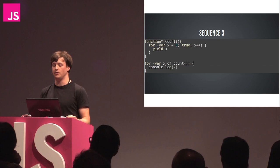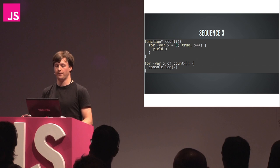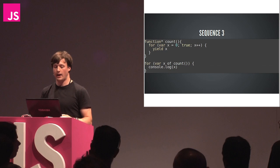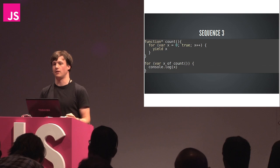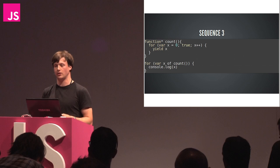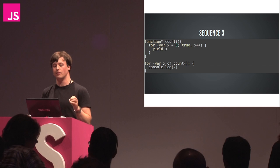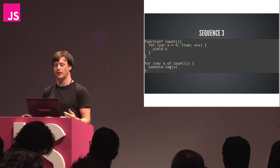What happens with this count function is that the function is executed only when we request the value. Initially, when you call count, none of the code inside the body is executed. Then the for loop requests the first value from count, and at that point it executes as far as that first yield keyword. When it gets to that first yield keyword, it returns that value and we get to use it in the for loop, but it pauses the function - it saves the entire execution state of that function.